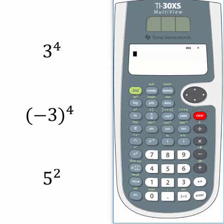The clear button is located below the directional pad. Let's try the second problem: negative 3 inside parentheses, raised to the power of 4. A negative number inside parentheses, when raised to an even exponent such as 2, 4, 6, 8, and so on,